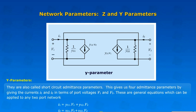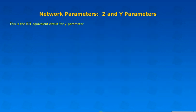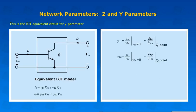These are general equations which can be applied to any two-port network. This is the BJT equivalent circuit for Y Parameter.